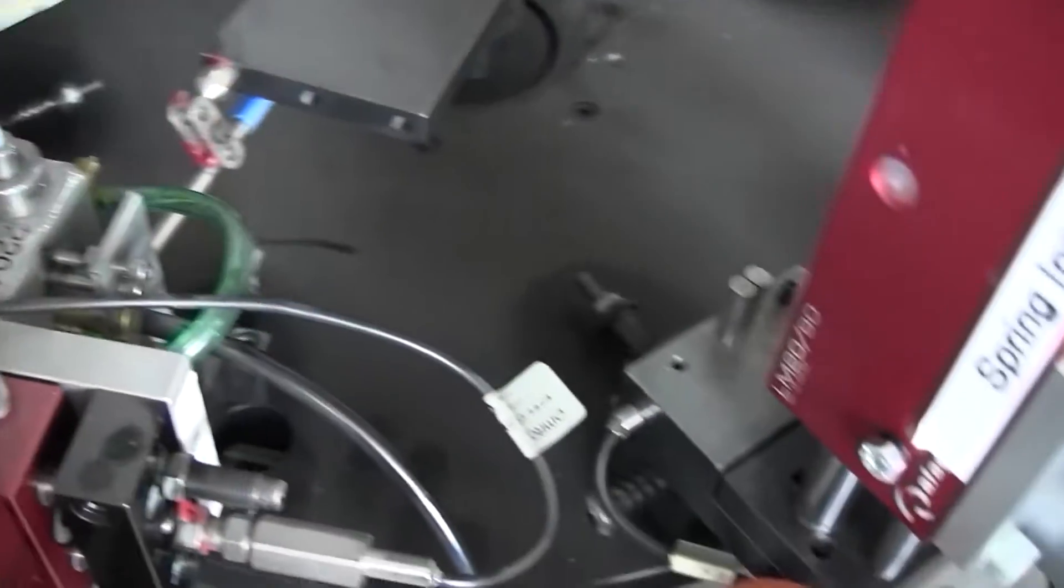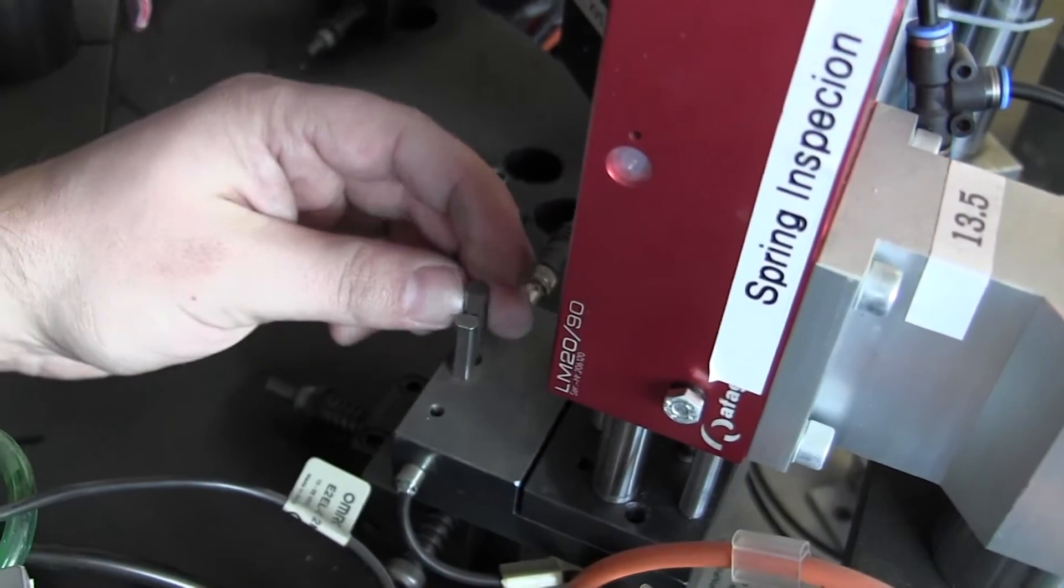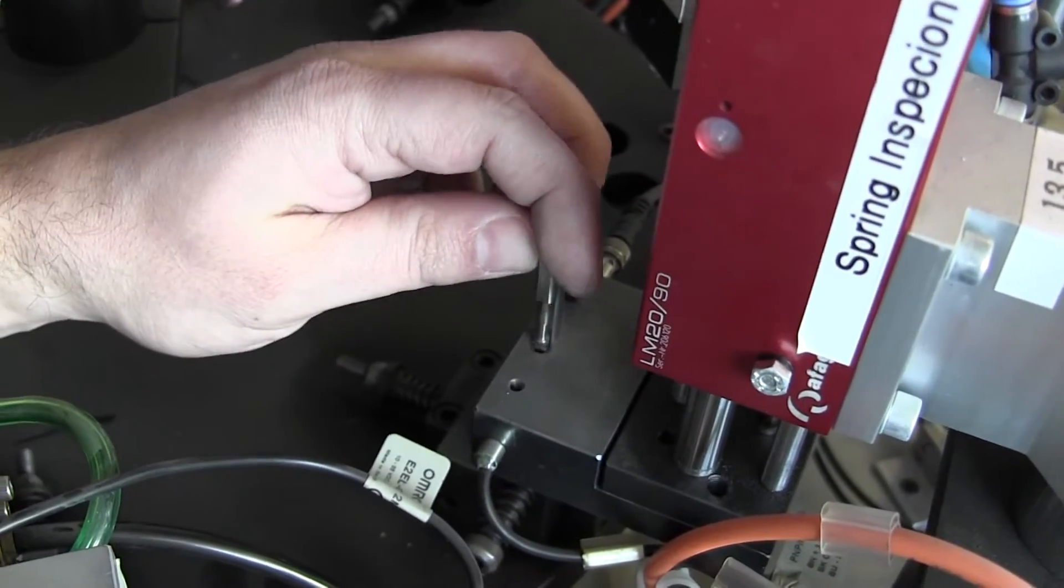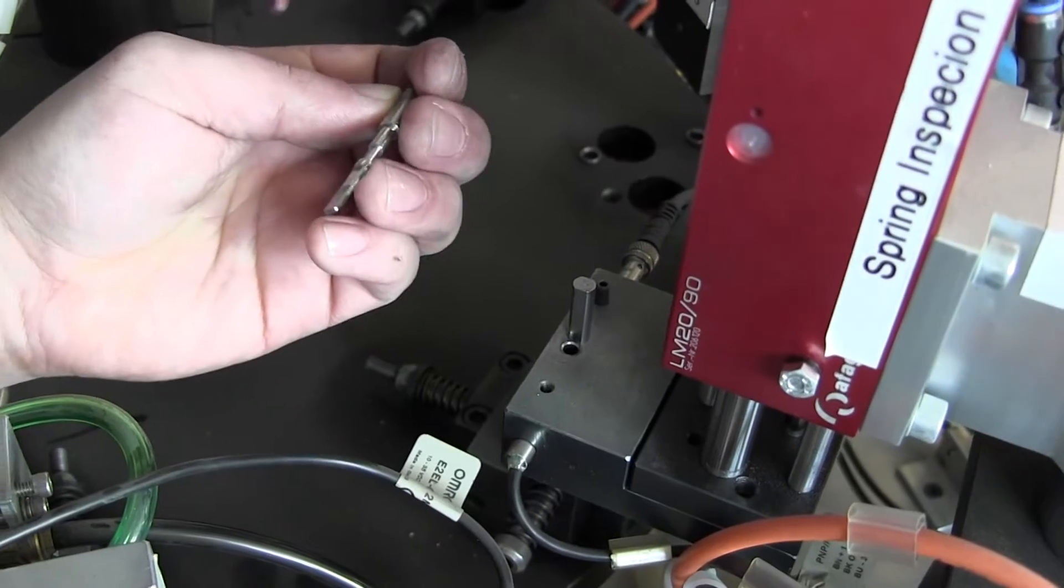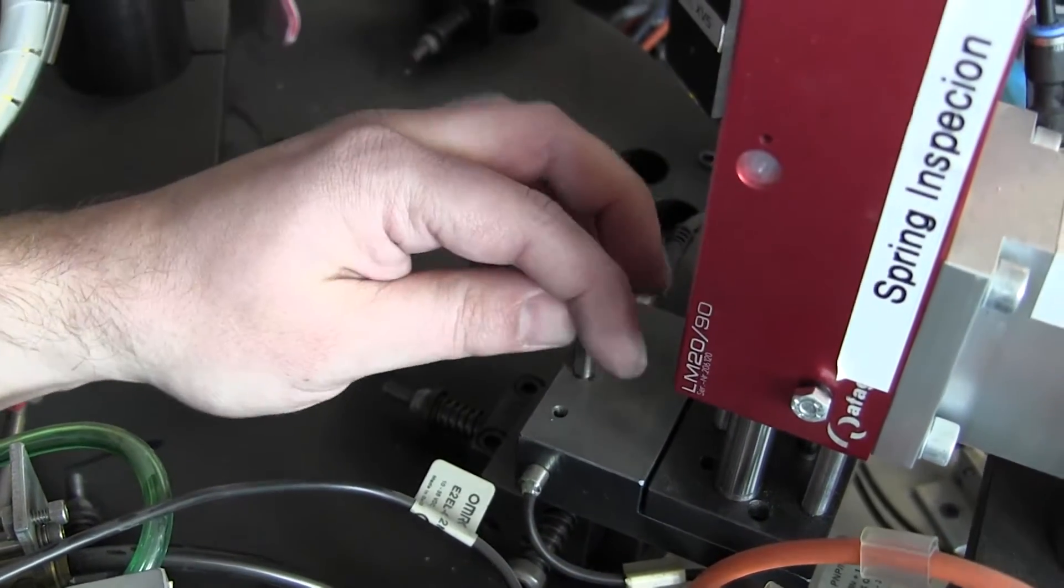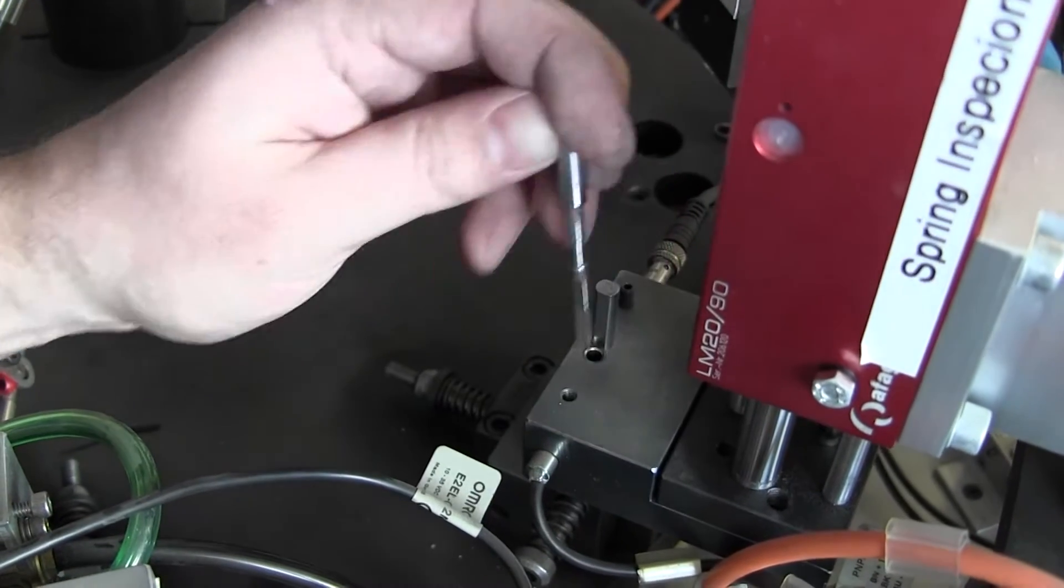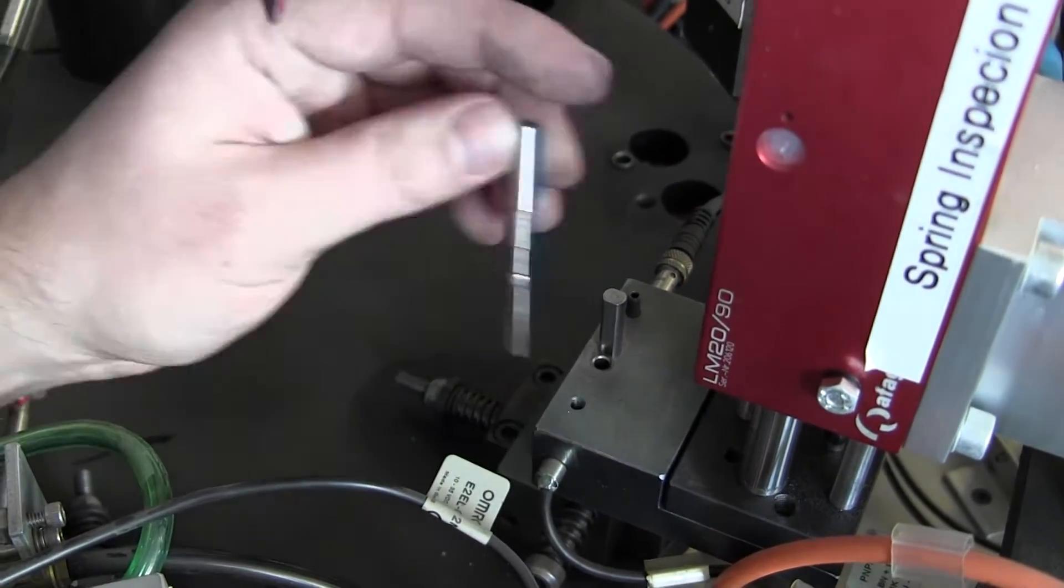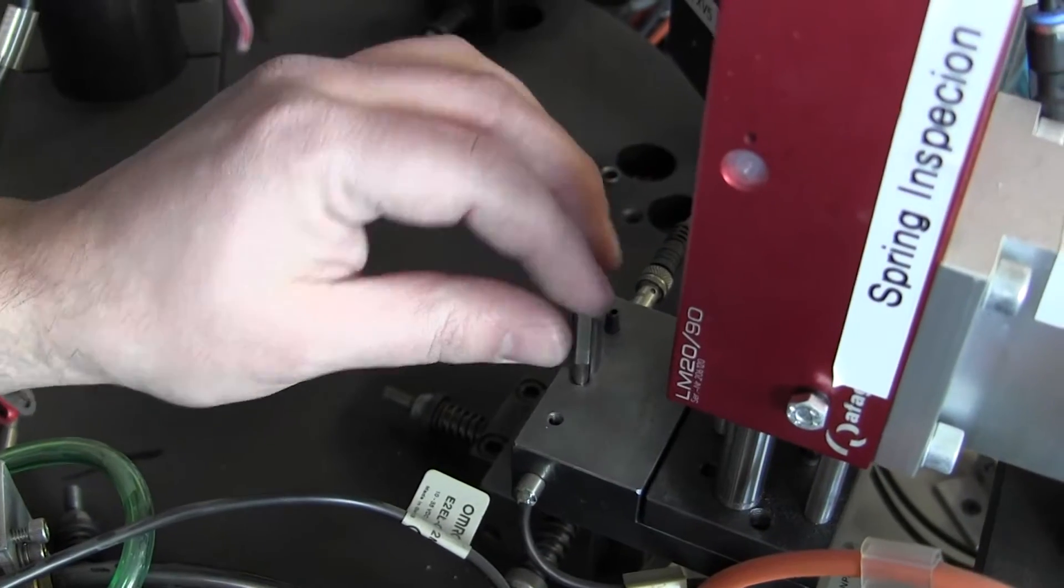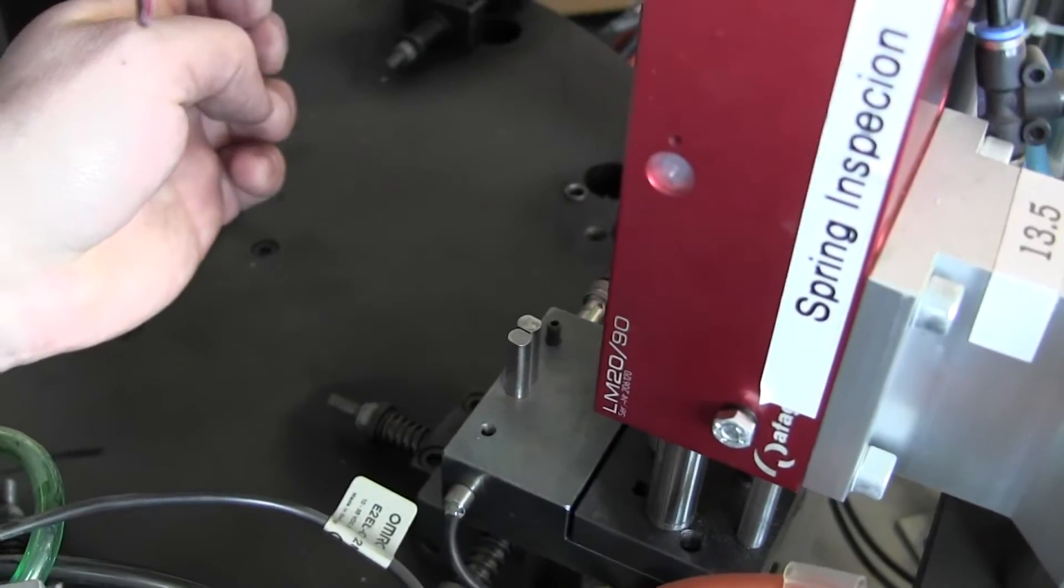And this next station, table indexes, then this next station here comes down with these two little titanium fingers. And they basically rest on the spring. And then if there's a spring in there, it pushes this up a certain amount. And then this fat part of the inspection finger lines up with this sensor telling us there's a spring in there on both sides.